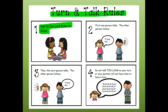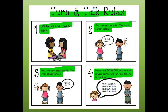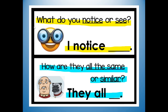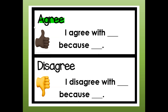Let's go over our turn and talk rules. Number one, eye to eye and knee to knee — if you have a partner at home, you face them when talking and listen to their words. Number two, first one person talks, the other listens. Number three, then the next person talks. I'm going to ask: what do you notice or see? And you say, 'I notice...' I'll also say, how are they all the same or similar? You can agree saying 'I agree with you because...' or disagree saying 'I disagree with you because...'